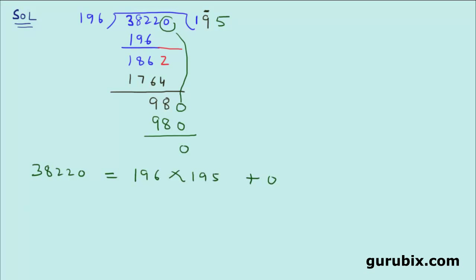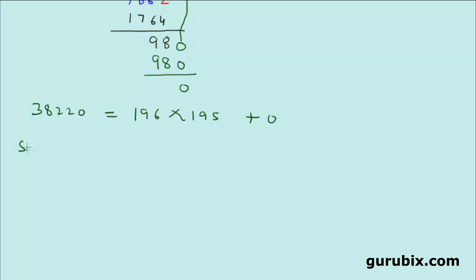By Euclid's division algorithm, which says that at any stage when the remainder is 0, the divisor at that stage will be the HCF.